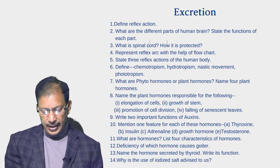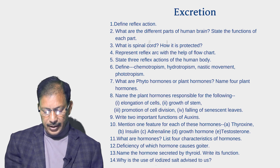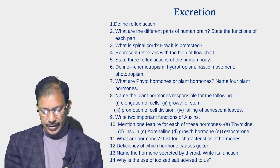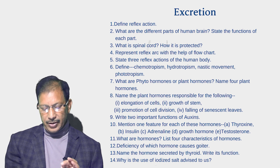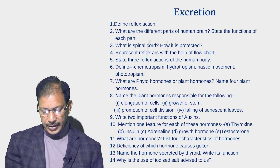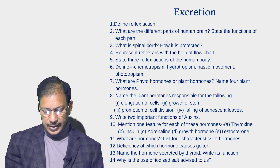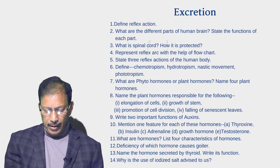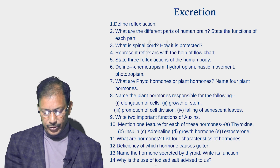Represent the reflex arc with the help of a flow chart. State three reflex actions of the human body. Define chemotropism, hydrotropism, nastic movement, and phototropism. What are phytohormones or plant hormones? Name the four plant hormones. Name the plant hormones responsible for: elongation of cells, growth of stem, promotion of cell division, and the falling of sensitive leaves. Write the two important functions of auxin.